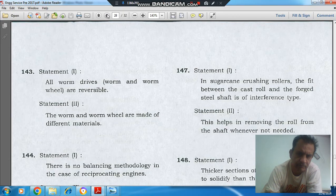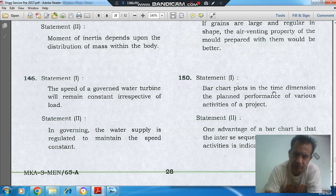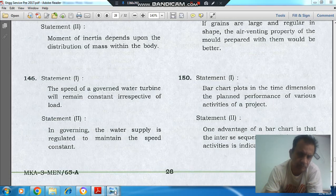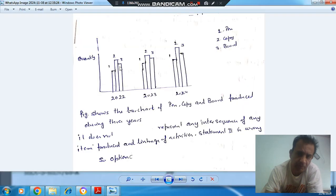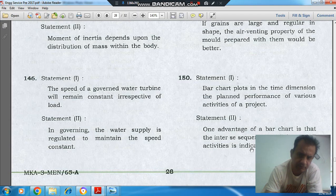Statement 1 is true. Statement 1 says the bar chart plots in time dimension the planned performance of various activities of the project. So it shows the planned performance in year 22, 23, 24. But it doesn't represent the inter-sequence and linkage of all the activities. So the answer is option C.